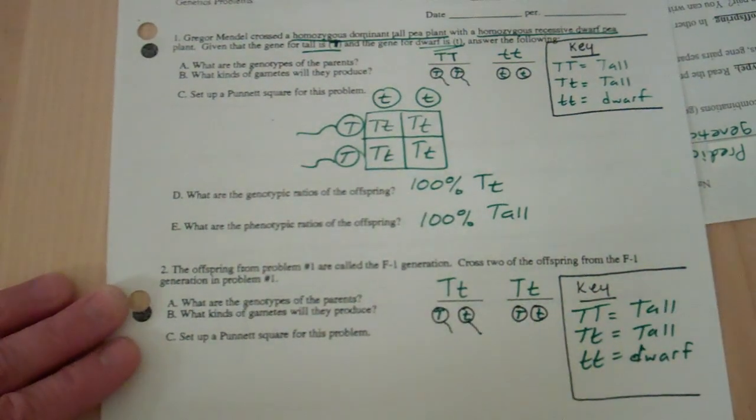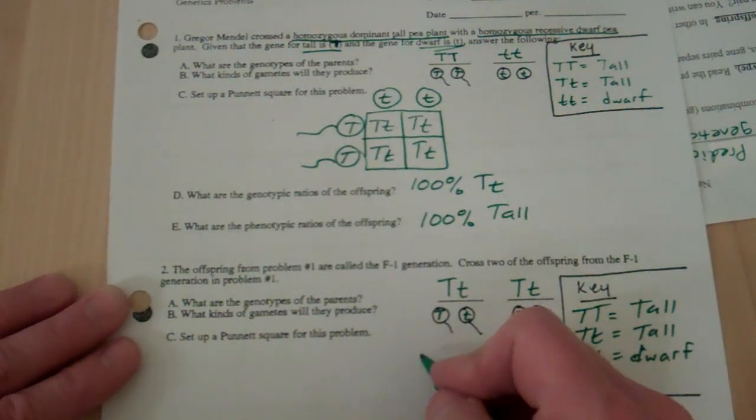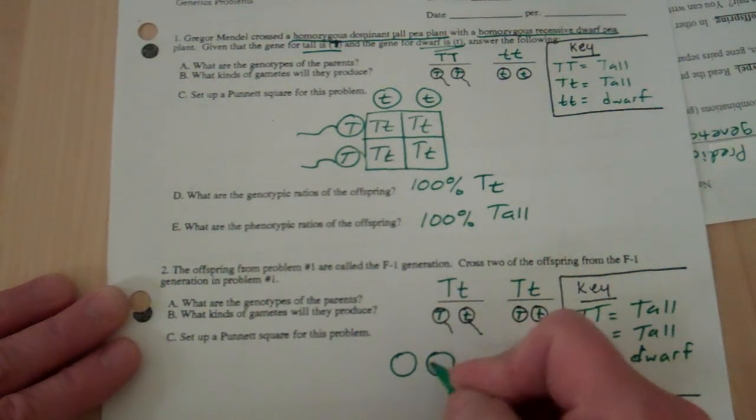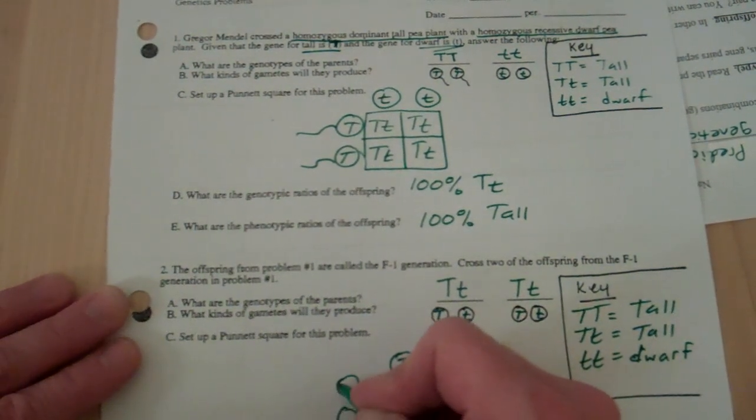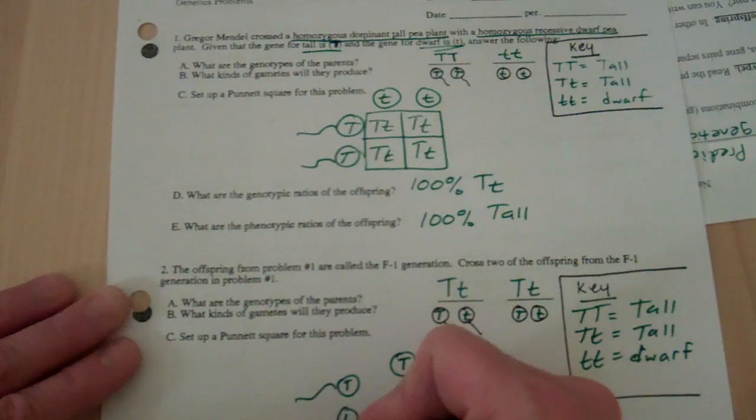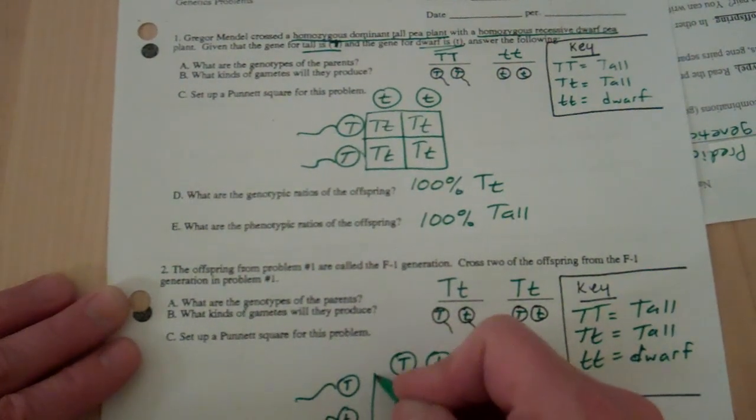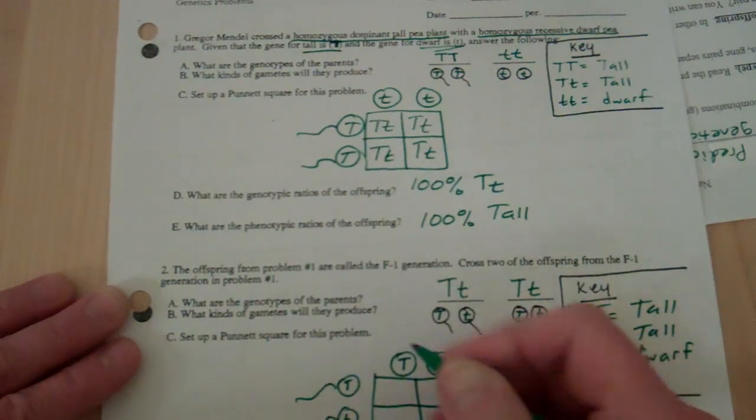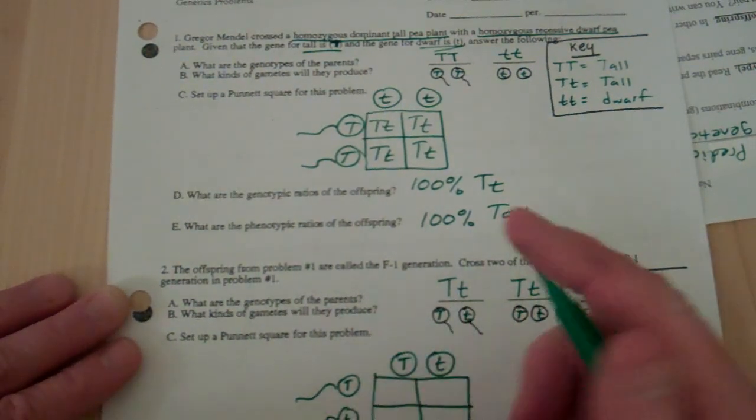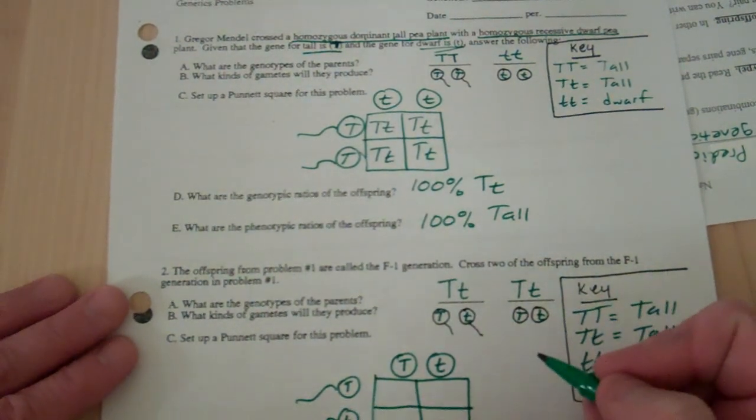Make your Punnett square again. I always put the eggs up here and the sperm over here, but you can move them. You can put the sperm up here and the eggs over here.